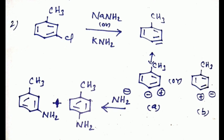Second example: meta-chlorotoluene. Here, the Z position has an electron donating group — the methyl group. In the first step, the elimination process removes the para position hydrogen while Cl is at the meta position, forming benzyne. In the second step, we consider the charge distribution: in option A, the meta position has positive charge and the para position has negative charge.